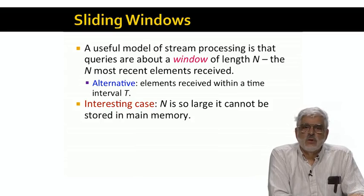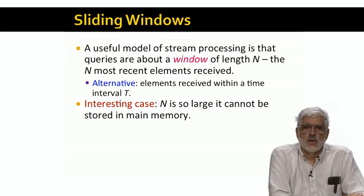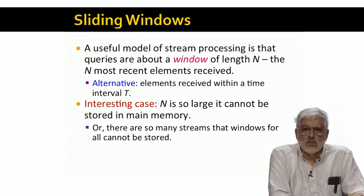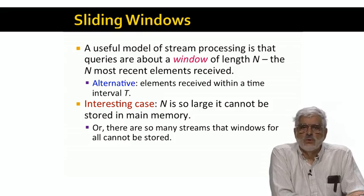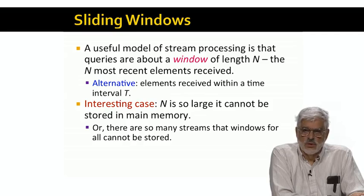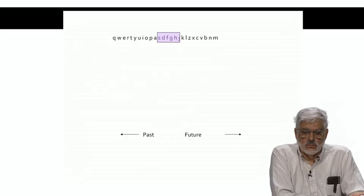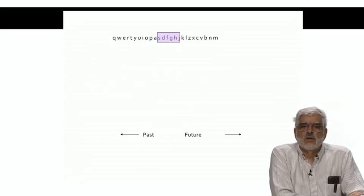The interesting case is when we're using a window consisting of the last N stream elements, but N is so large we cannot store N elements in main memory. And while we have options to increase the size of main memory, use many compute nodes to handle one window, or use disk in some cases, we also need to consider the case where there are many streams, perhaps millions of streams, arriving at the same stream processor. In that case, N does not have to be very large before we cannot store all the windows in a way that allows us to get exact answers to queries about the contents of the windows.